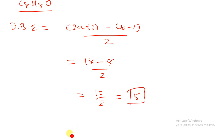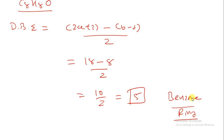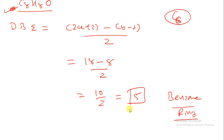If you are getting a DBE value more than 4, you can say the compound should have a benzene ring. Remember: if you have a benzene ring, the compound formula should have at least 6 carbon atoms. You have to simultaneously compare the DBE value as well as the molecular formula.